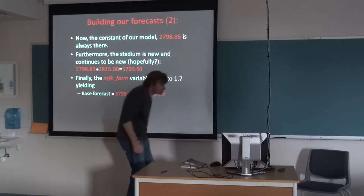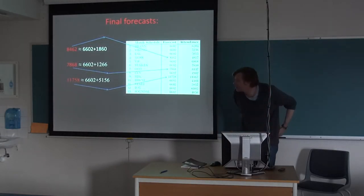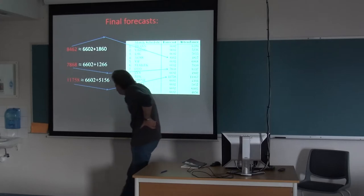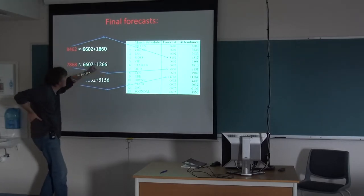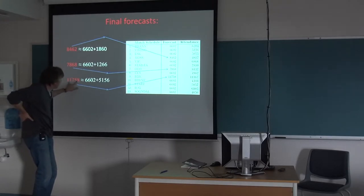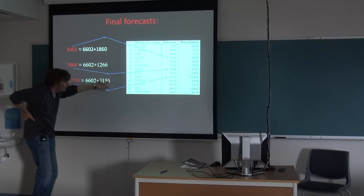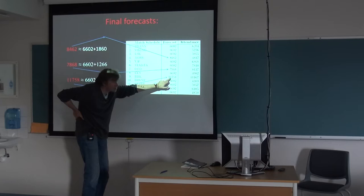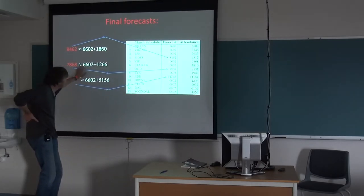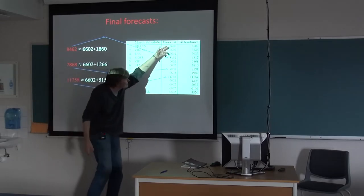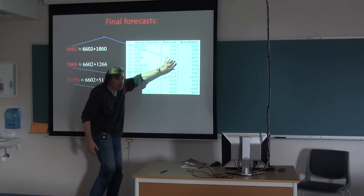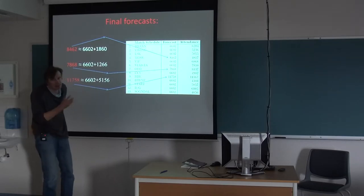All matches which are not on the 16th of May, not against Rosenborg, and not in Jazz Week will produce the base forecast. We add the 16th of May value to the Moss match, producing 8,462 as the final prediction. We add the Rosenborg coefficient for match 9, producing a total of 11,758 spectators. And finally we add the Jazz Week value for match 7 against Odd, giving a forecast of 7,868. This is a quite simple forecast model — a base forecast for most matches, with additions on top for the significant effects.